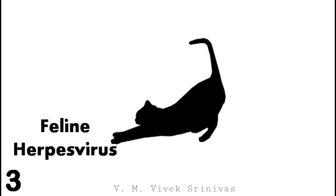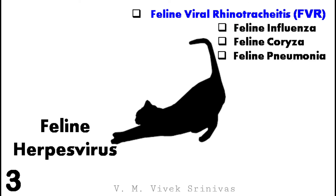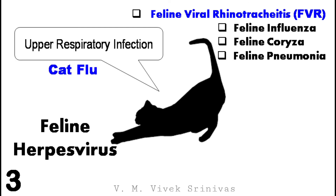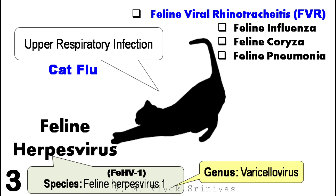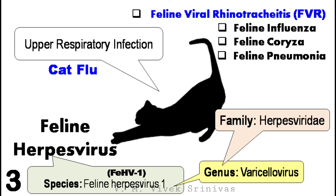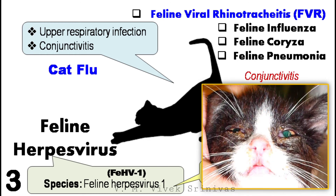Feline Herpes Virus causes feline viral rhinotracheitis in cats. This viral infection is also known as feline influenza, feline coryza, and feline pneumonia. This is also a causative agent for cat flu, causing upper respiratory tract infection in cats. This infection is caused by the species Feline Herpesvirus 1, of the genus Varicellovirus, family Herpesviridae. This infection is characterized by upper respiratory infection and conjunctivitis. The picture shown at right is a cat with conjunctivitis — that is, inflammation of the conjunctiva — due to feline herpes virus.